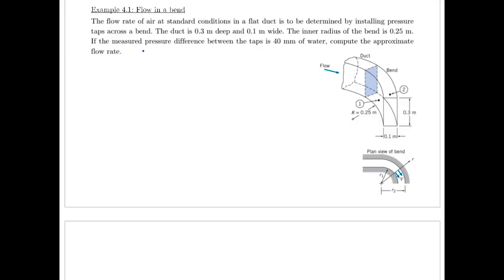Okay, so we've got flow through a bend in a duct here. The flow rate of air at standard conditions in a flat duct is going to be determined by installing pressure taps across a bend. So the pressure taps are shown here at point 1 and point 2. Okay, so you want to measure the flow, and the way you do that is to put these little pressure taps on there, right?